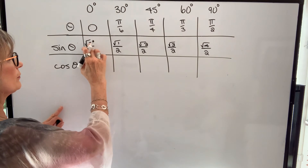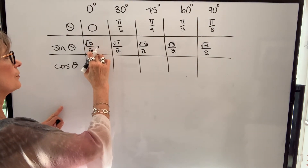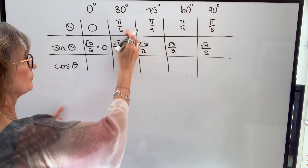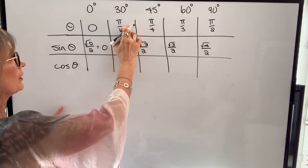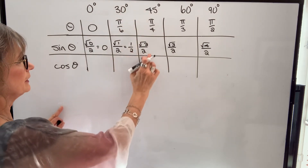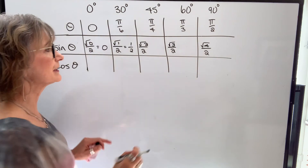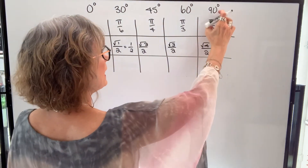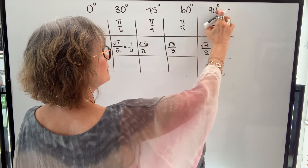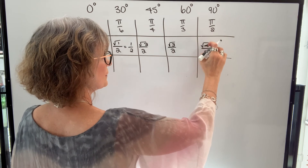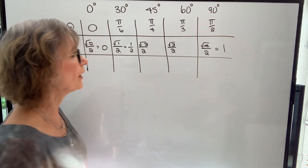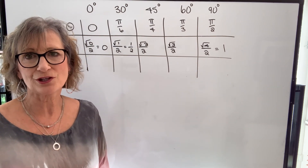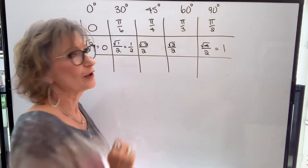Now let's simplify. Square root of 0 over 2 is 0. Square root of 1 we just write as 1, so sine of 30 degrees or pi over 6 radians is one half. Root two over two — nothing to simplify, leave it. Sine of 60 degrees is root three over two, also leave it. And the sine of 90 degrees or pi over 2 radians is root four, which is 2, over 2 — that simplifies to 1. There are all the special values for sine, including 0 and pi over 2 radians.